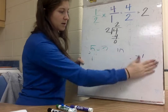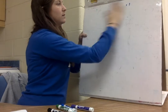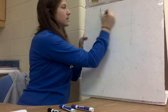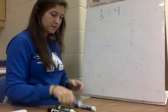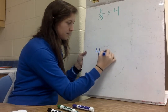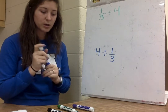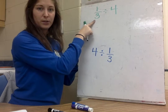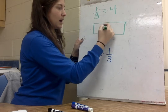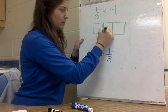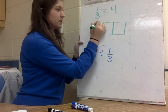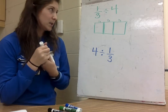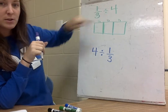Last but not least, we have dividing fractions. There are two different types of problems we've seen. We're going to start with the first one: 1 third divided by 4. The first thing I have to do is represent one third, so I'm going to draw a rectangle and cut it into thirds. Now I have one third, one third, one third. Next, I'm going to divide this amount into four pieces.